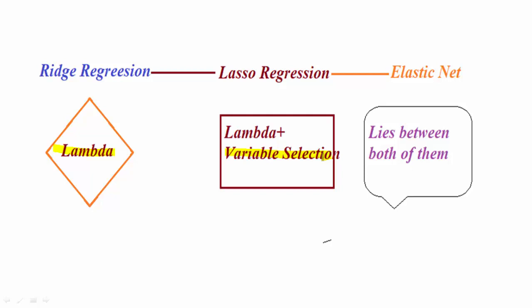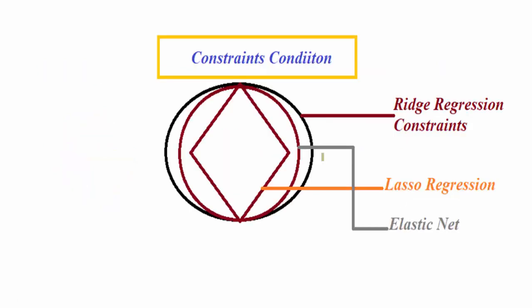This slide is all about giving a view into your mind that what we are going to study. This is the constraint condition. Constraint condition is that how these models look like. Like if you have a diamond shape, we say it is a lasso regression. If it is a circle shape, it is a ridge regression constraint. And if it lies between the diamond and the circle, it is basically the elastic net which I have covered using the gray color.